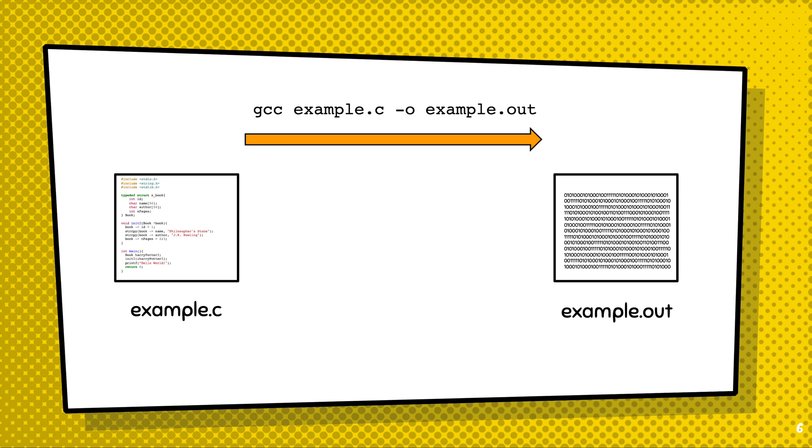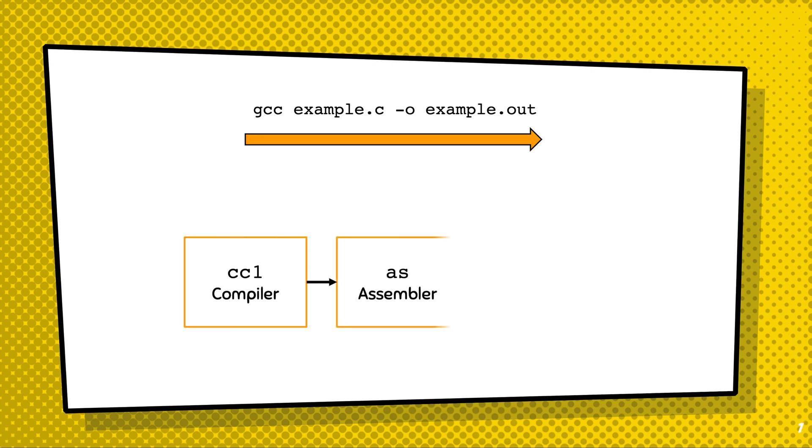Although compiling a file only requires one command, the compilation process is actually composed of multiple steps. In fact, gcc is composed of three components: compiler, assembler, and linker.